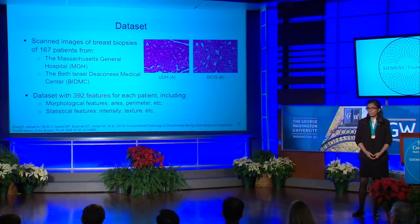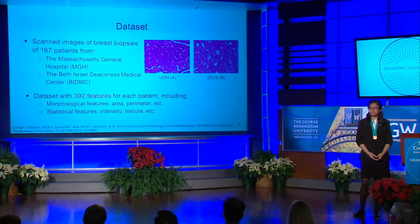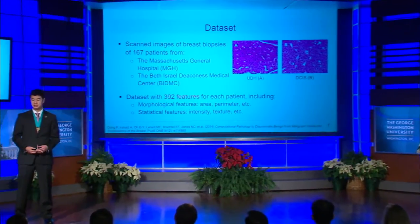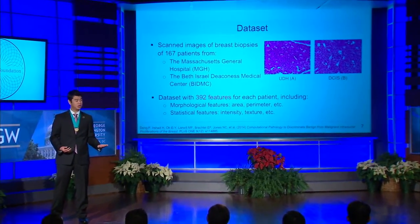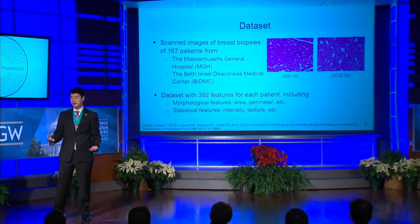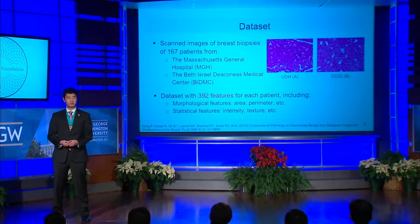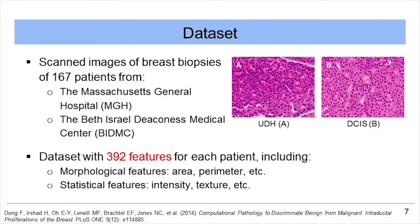We obtained scanned images of breast biopsies of 167 patients from two different hospitals, the Massachusetts General Hospital and the Beth Israel Deaconess Medical Center of the Harvard Medical School. From each sample, we extracted 392 features, including morphological features such as the area and perimeter of the cell nucleus, and statistical features such as intensity and texture.